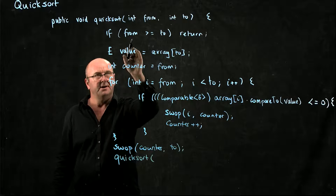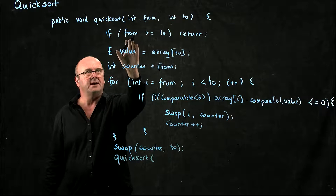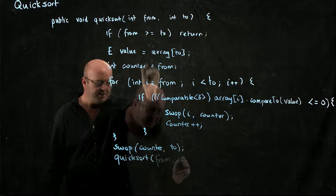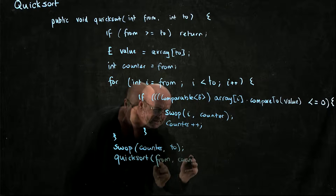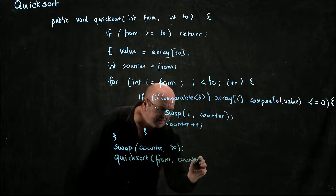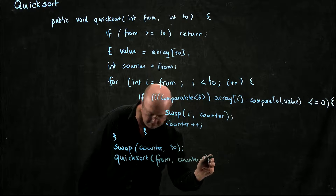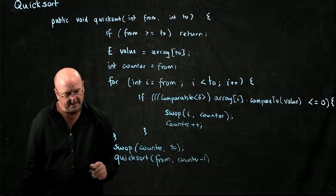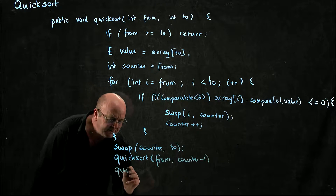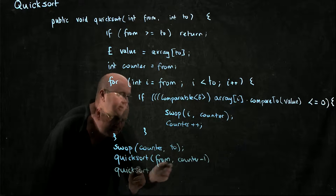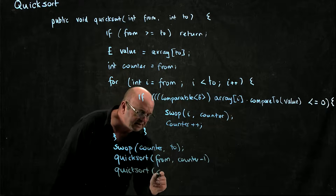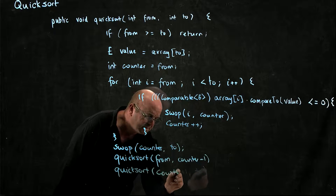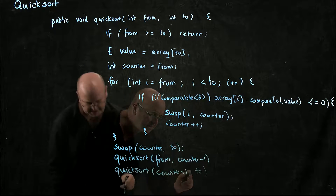So we're going to quicksort the left-hand side of the array — from `from` to `counter - 1`. And we're going to quicksort from `counter + 1` to `to`.